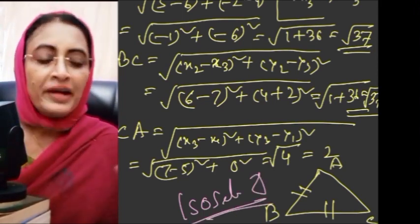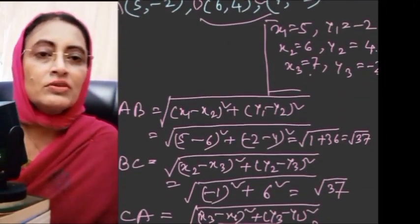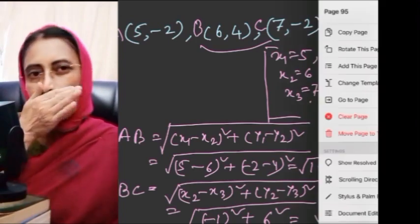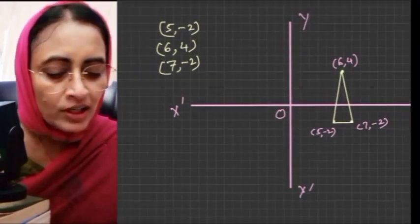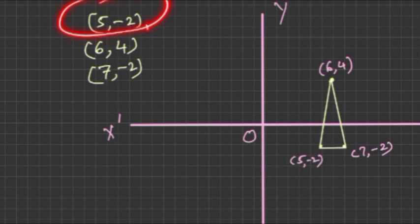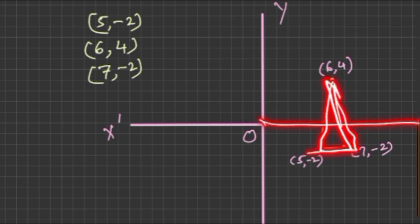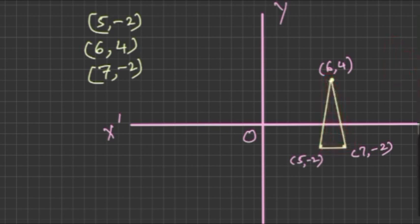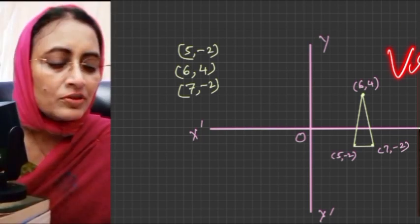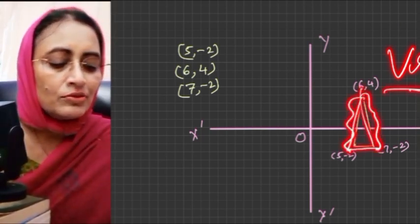We can also verify this graphically. After plotting and joining the points, you can verify that two sides are equal, confirming it is an isosceles triangle.